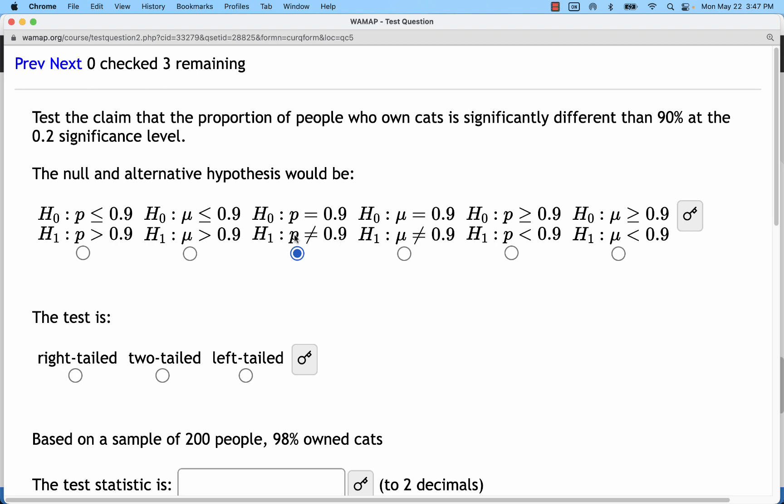p is not equal to 0.9. This is the only option with that as an alternative hypothesis. We would never put the not equal sign next to H0, because you'll notice every single one of those has some kind of equal sign.